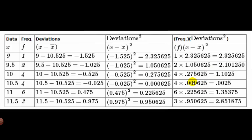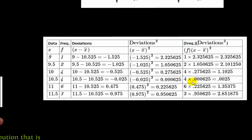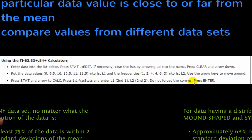That's why we don't do this by hand — there's a lot of work. Instead we use the calculator: enter the data in the statistics lists, including frequencies if needed. When we run one-variable statistics, we'll see both the sample standard deviation and the population standard deviation displayed along with the mean and other values.